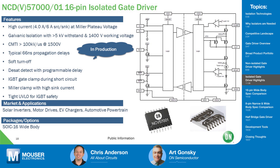The NCD57000 features a 66-nanosecond propagation delay, soft turn-off, desaturation detection with programmable delay, IGBT gate clamp during short circuit, Miller clamp with high sink current, and tight under-voltage lockout for IGBT safety. It covers armored powertrain, EV chargers — the off-board garage kind — motor drivers, and solar inverters. It comes in an SOIC-16 wide-body package, withstands 5 kilovolts, and integrates the gate driver and isolation on a single IC.